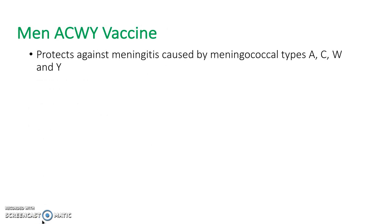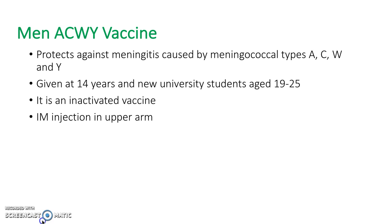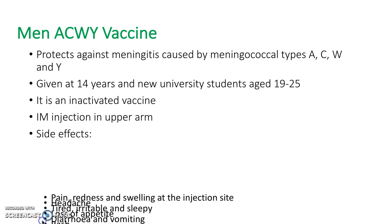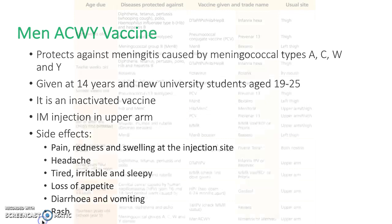The final vaccine to discuss is the Men ACWY vaccine, which is given at age 14 and also to new university students aged 19 to 25. It is protective against four different strains of meningitis: A, C, W and Y.